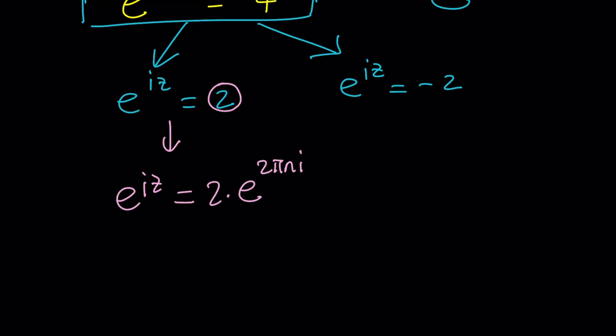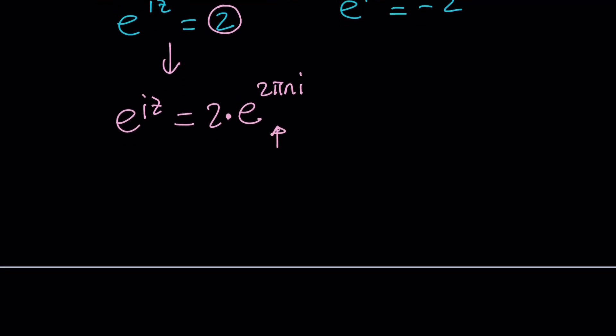So, I just wanted to multiply by 1, but it's a complexified version of 1. Make sense? This is always 1. Remember? This one. So, we can ln both sides. iz is going to give us ln 2 plus 2 pi and i.